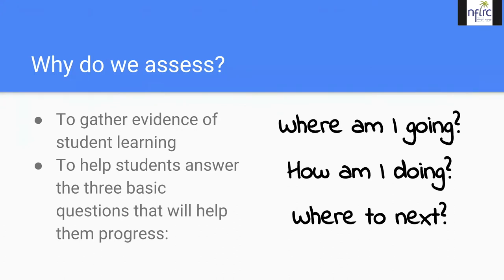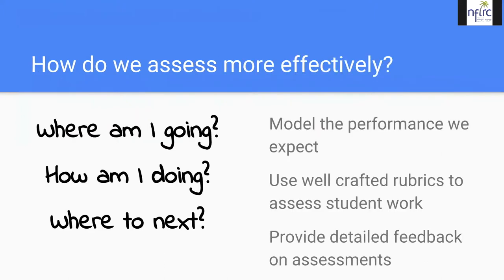We talked about why we assess: to gather evidence of student learning and to help students answer three basic questions — where am I going, how am I doing, and where to next. Fernando suggested assessing more effectively by thinking about how to provide the best feedback. For 'where am I going,' model the expected performance. For 'how am I doing,' use well-crafted rubrics. For 'where to next,' provide detailed feedback on assessments.